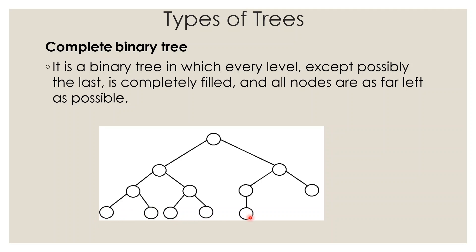In a complete binary tree, all nodes are as far left as possible. If a node has a single child, it must be the left child, not the right. If the left is filled but the right is not, the tree is still a complete binary tree. This left-to-right filling property is what defines it as complete.